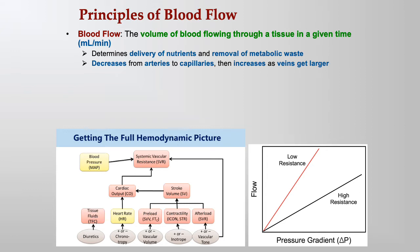Blood flow decreases from arteries to capillaries and increases as the veins get larger. When the heart pumps blood out into the big arteries — the aorta, pulmonary trunk, iliacs, brachials — as you branch further and further out, flow decreases. By the time you reach the capillaries, it's at its lowest. Then as blood flows back into veins, the veins get bigger and bigger, and flow increases.